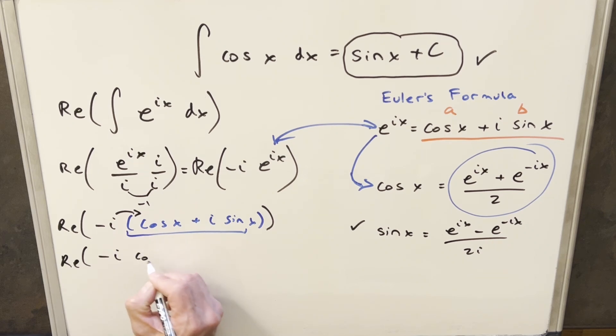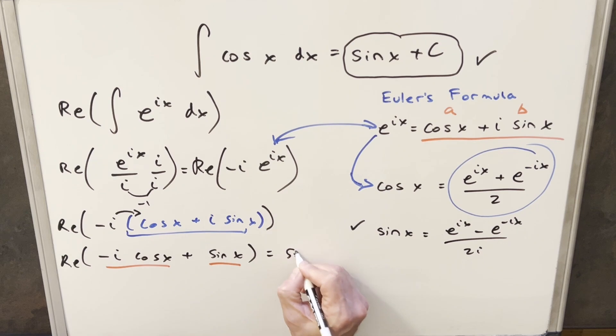We'll end up here with minus i cosine x. i times i is going to be minus one with a minus, it's going to be plus sine x. But now we have this really in our a plus bi notation, just in the wrong order, right? This will be our a and this is the bi over here. So we just want the real part of this. The real part of this is just going to be sine x. And I'll put a plus c on it and that's it.